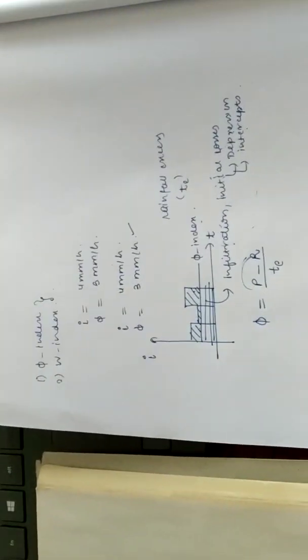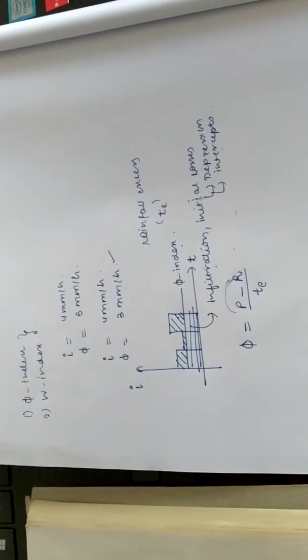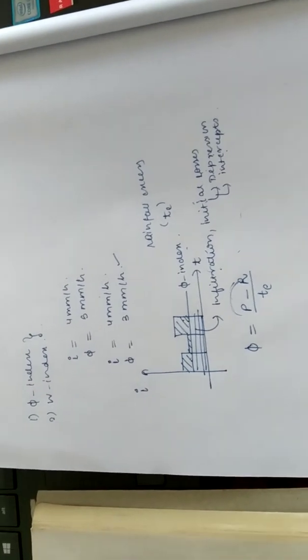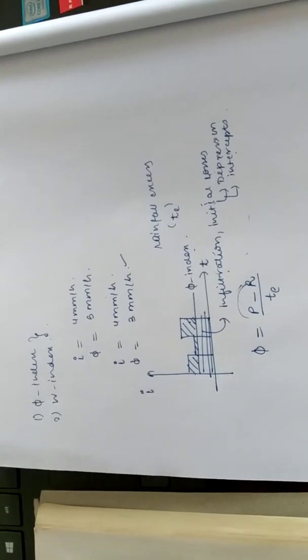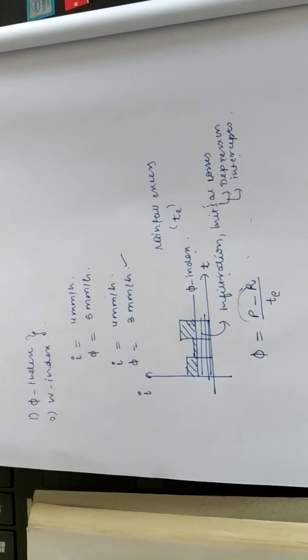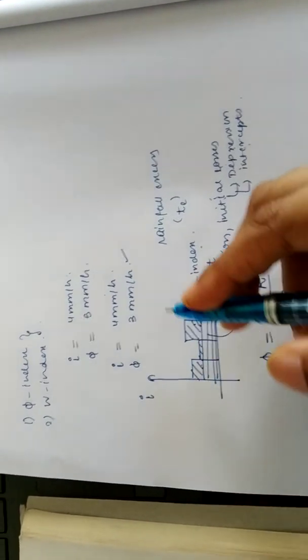Now, to estimate the phi index, we have a method. We do not have a certain method but we have a trial and error method. We will check this based on two conditions. What are those two conditions?